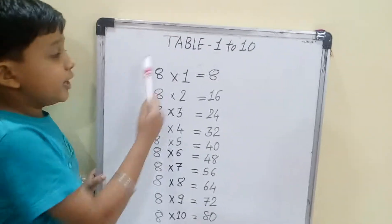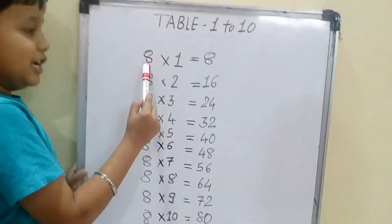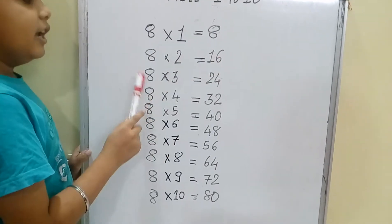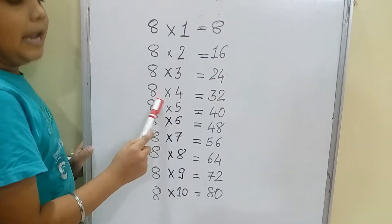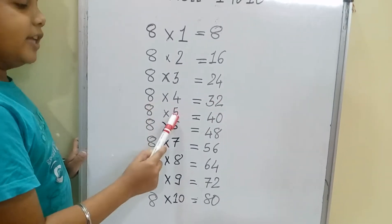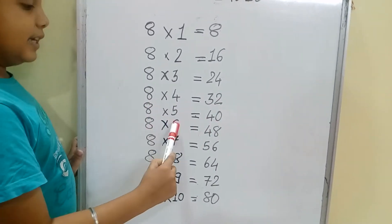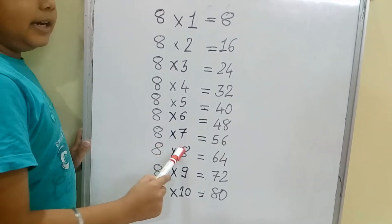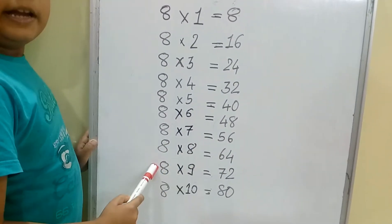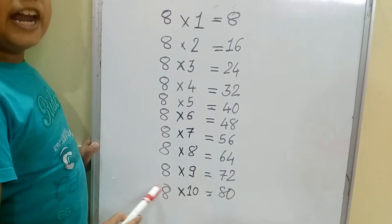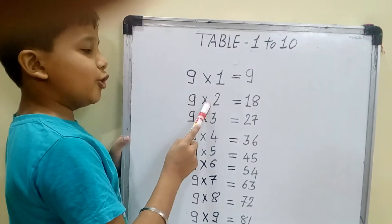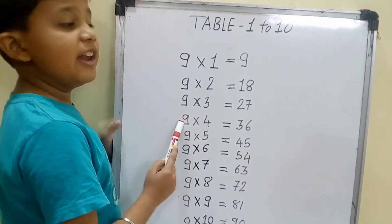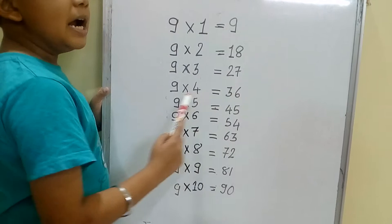Now children, repeat with me. The table of 8. 8 one is 8, 8 two is 16, 8 three is 24, 8 four is 32, 8 five is 40, 8 six is 48, 8 seven is 56, 8 eight is 64, 8 nine is 72, 8 ten is 80.